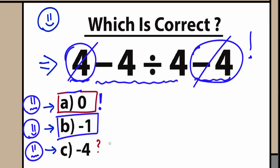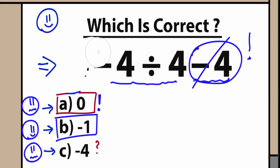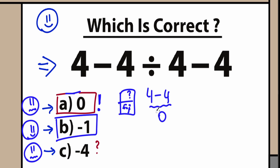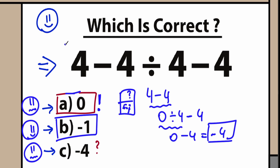Sometimes students try to plug this question into a calculator. Here's a tricky moment: if you type in four minus four first, some calculators give you zero right away because the calculator doesn't know what comes next. Then you enter division by four, getting zero divided by four equals zero, and then minus four gives minus four. This is what happens when solving strictly left to right without respecting order of operations.